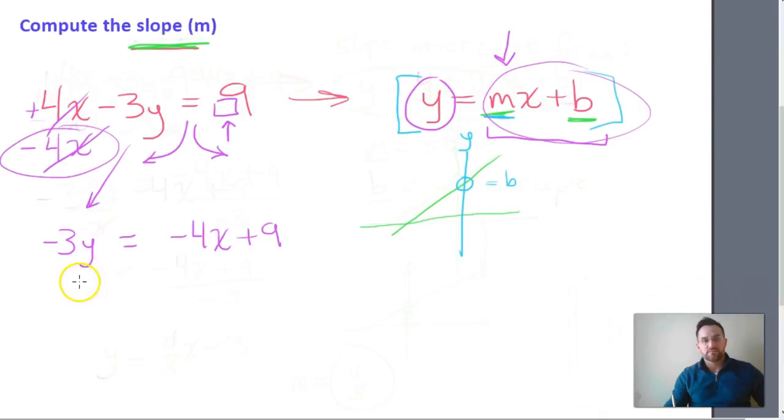So what can we do to get this y by itself? We talked about this in the last video in example 1 or example 2. We're going to divide away negative 3. And we've talked about why that cross-cancelling works. So we need to do it over here, divide away negative 3.